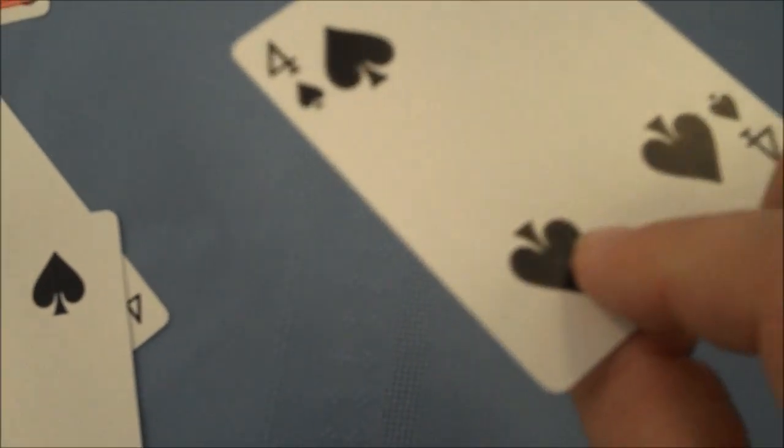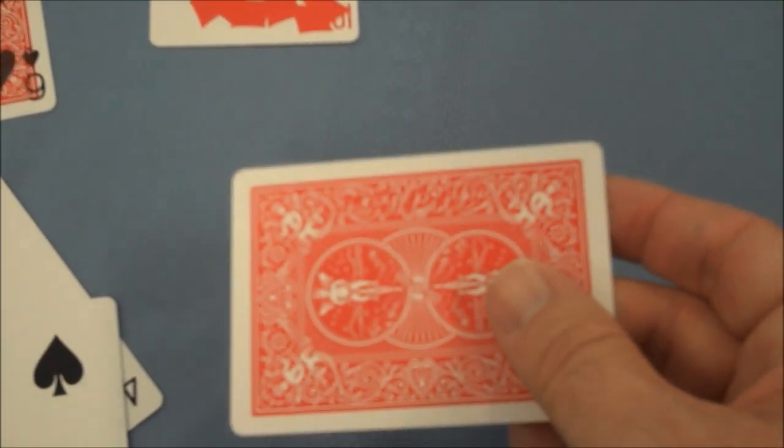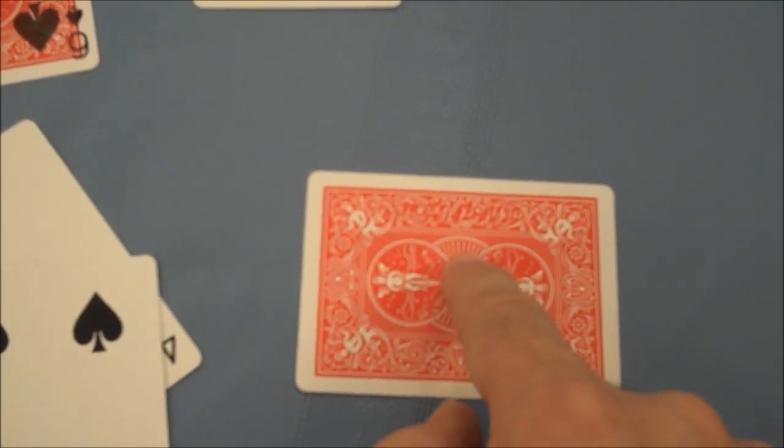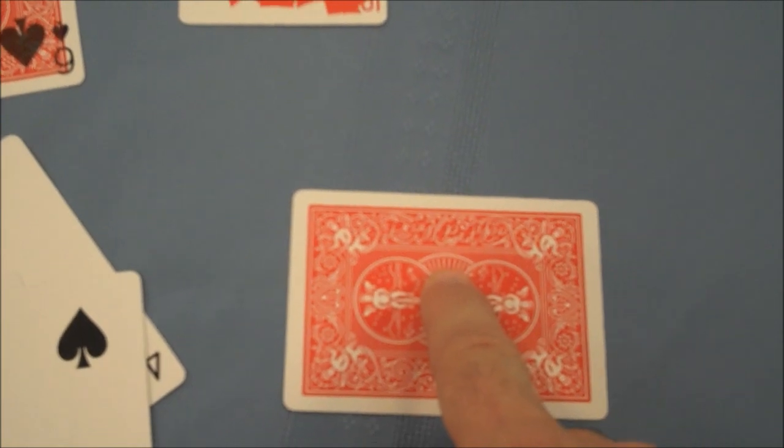And then last this four of spades that has the card reveal written into the scrolled work. This is also another Jay Sankey effect called Fine Print.